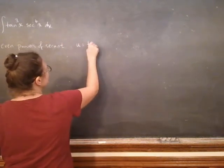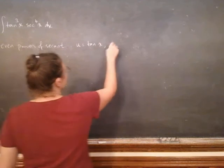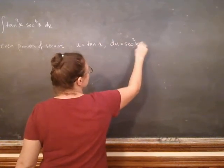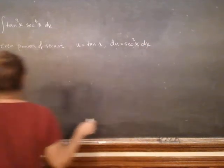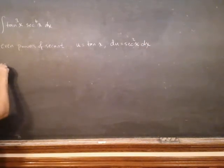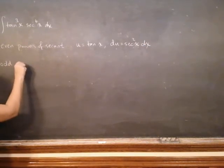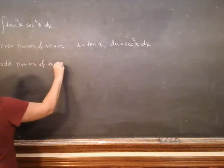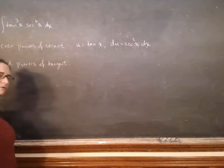So you want to do u equals tangent and then du is secant squared dx. If you have odd powers of tangent and some secants floating around,